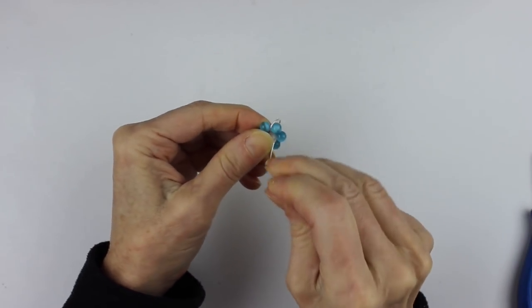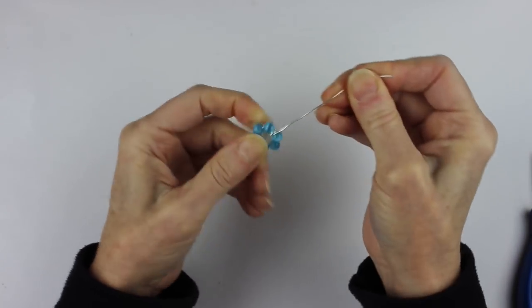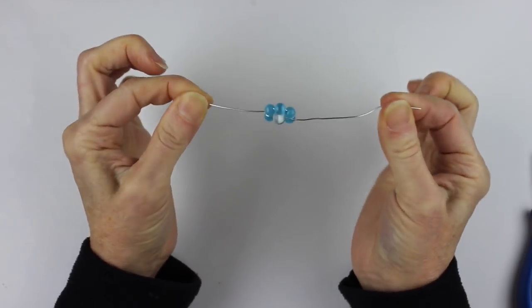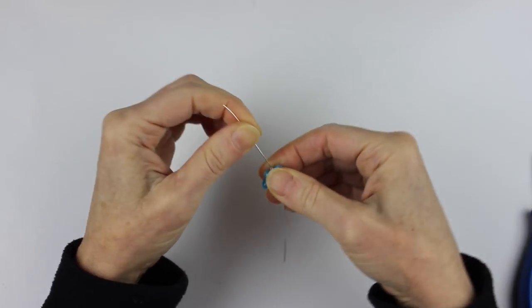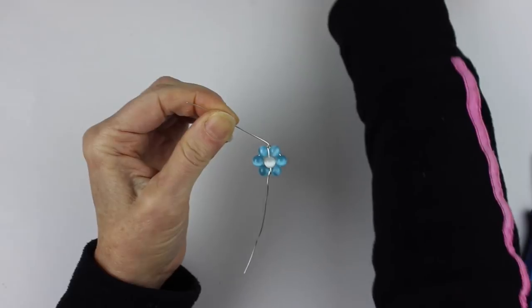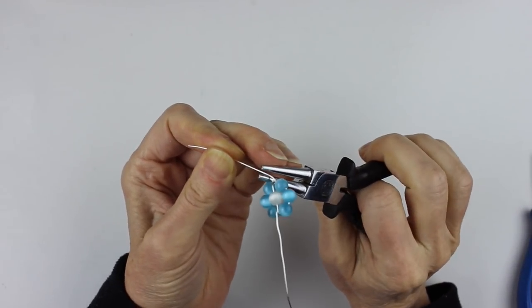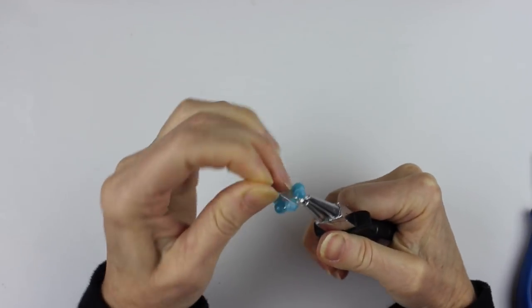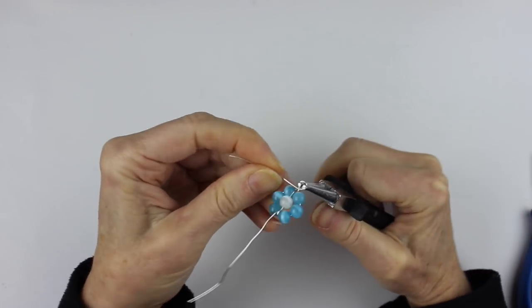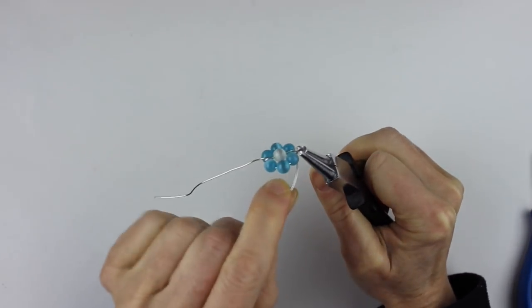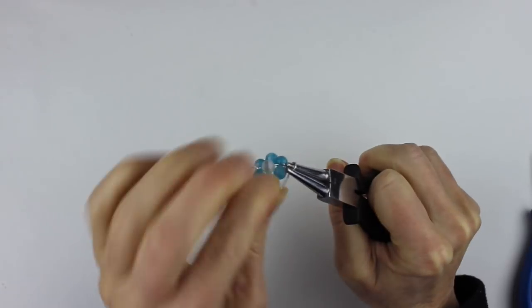You're going to go in between the beads there so there's three on either side so you have something that looks like that and then you want to bend that because we need a loop on either side. We're going to get the round pliers and just make a circle, twist the end around a couple of times.